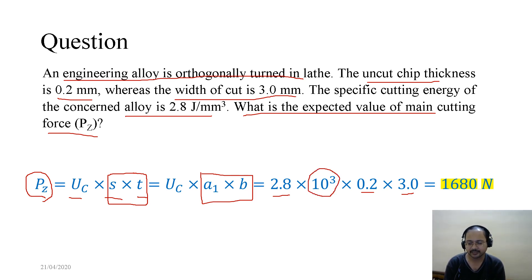Now the question is where does this 10³ come from? When you multiply them, you will not get the result in Newtons; rather you will get joules per millimeter. At that moment, you have to multiply it further with 1000 to get it in Newtons. So that gives 1680 Newtons.